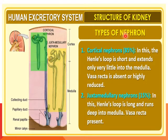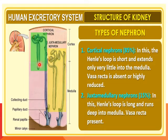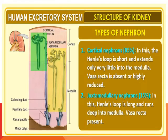There are two types of nephrons. The cortical nephron, which constitutes 85 percent, has a short Henle's loop that extends only a little into the medulla and the vasa recta is absent. The juxtamedullary nephron has a long Henle's loop that runs deep into the medulla and the vasa recta is present.